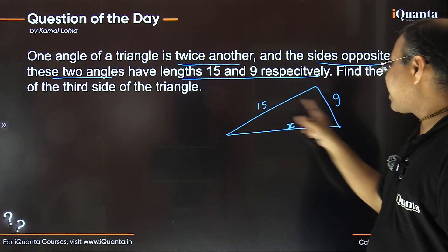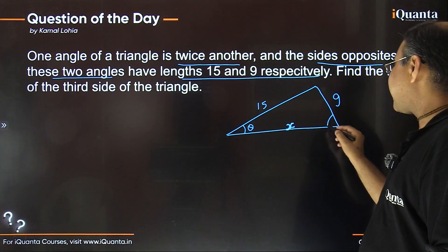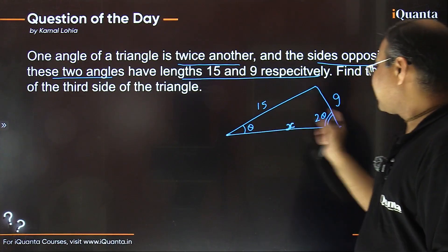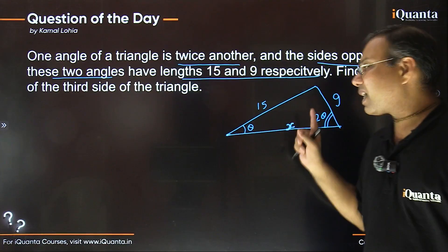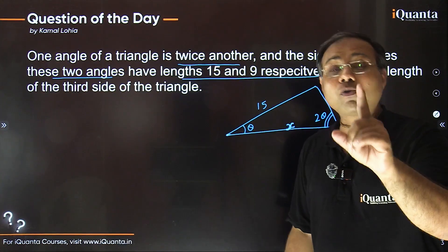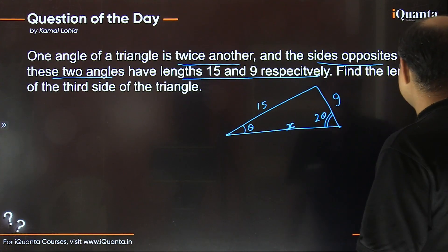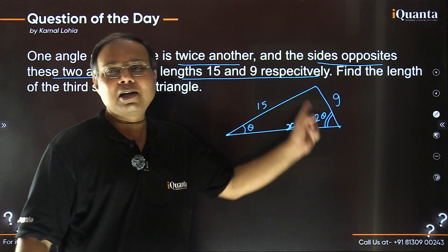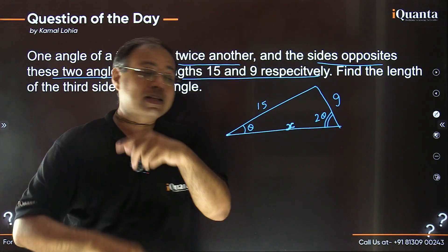The angles opposite these two sides are in the ratio 1 to 2. Since 9 is the smaller side, the angle opposite to it is smaller. So if this angle is theta, then the angle at the vertex opposite to 15 is 2 theta. Now, to find X we can make use of trigonometry — specifically there are two important trigonometric relations. Whenever we have three sides and angles opposite to them, we can use the sine rule.